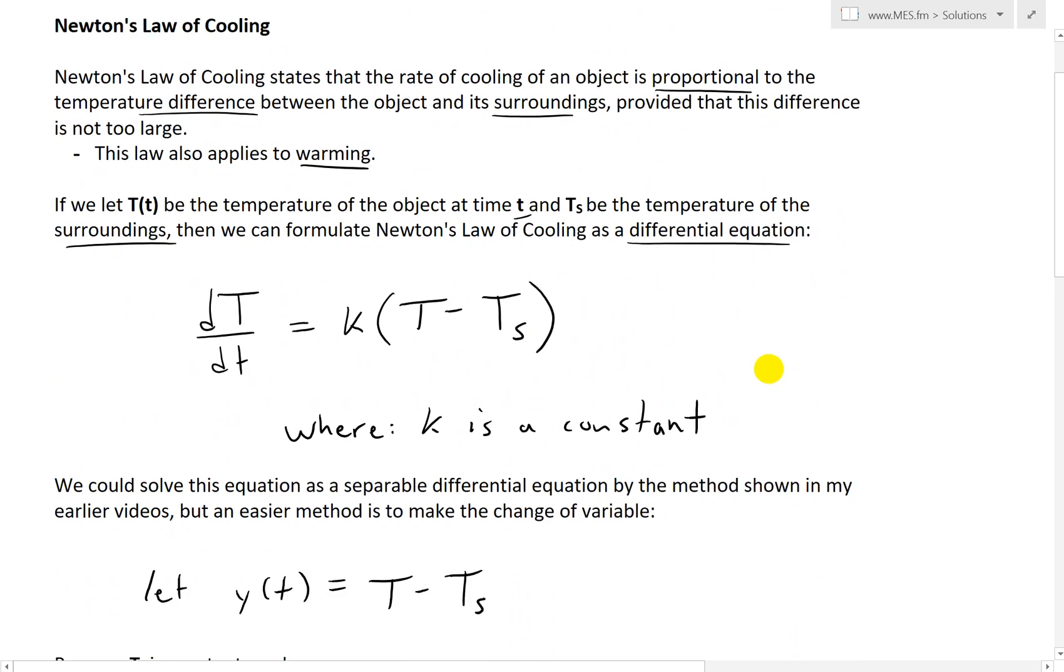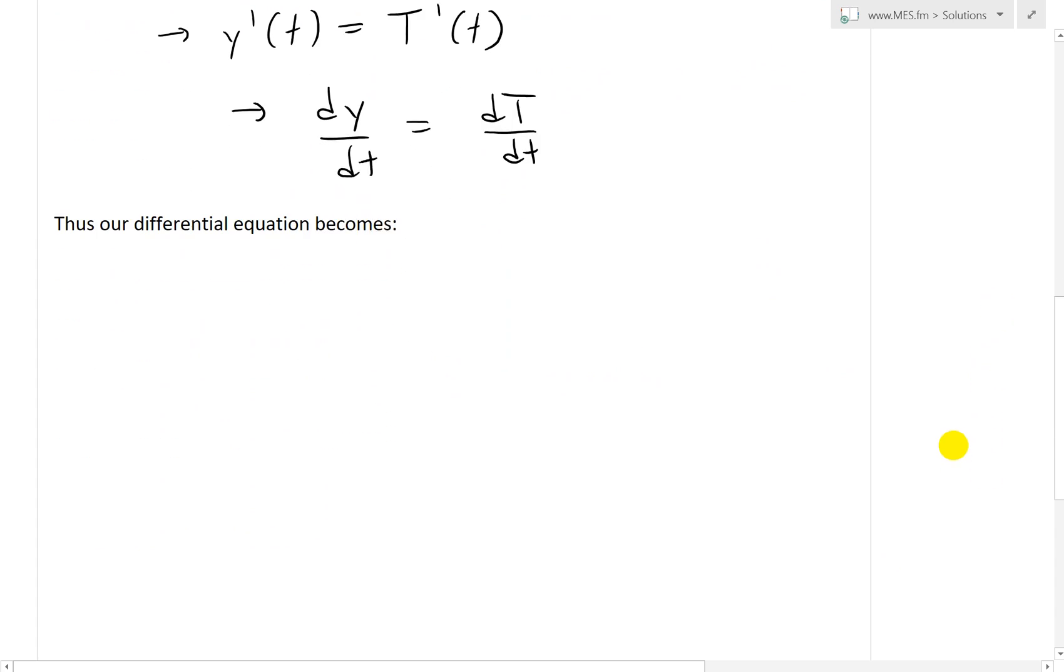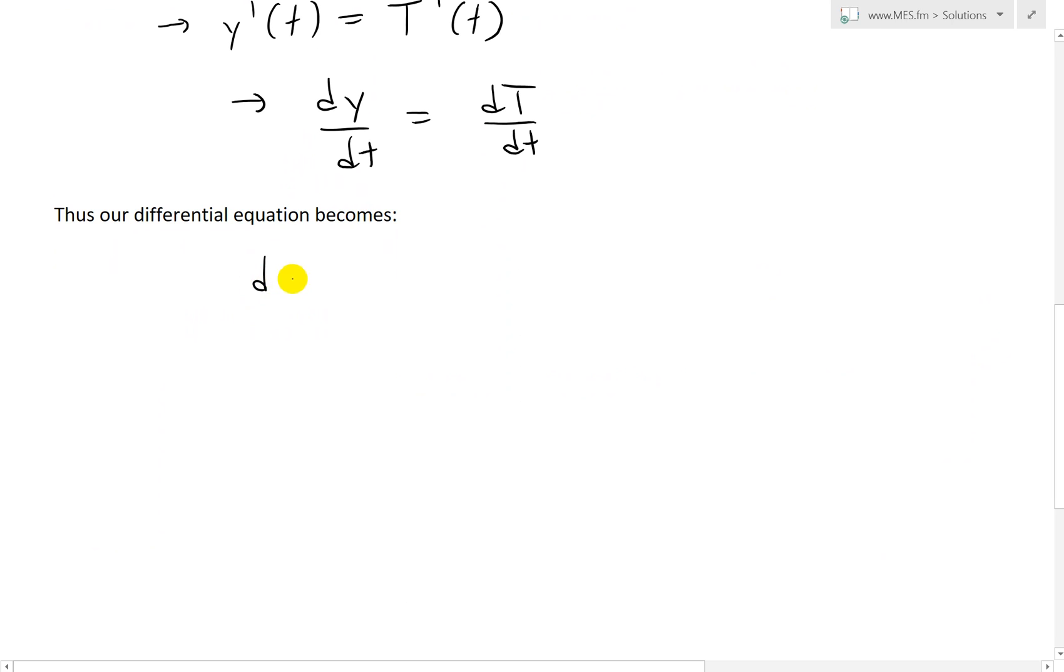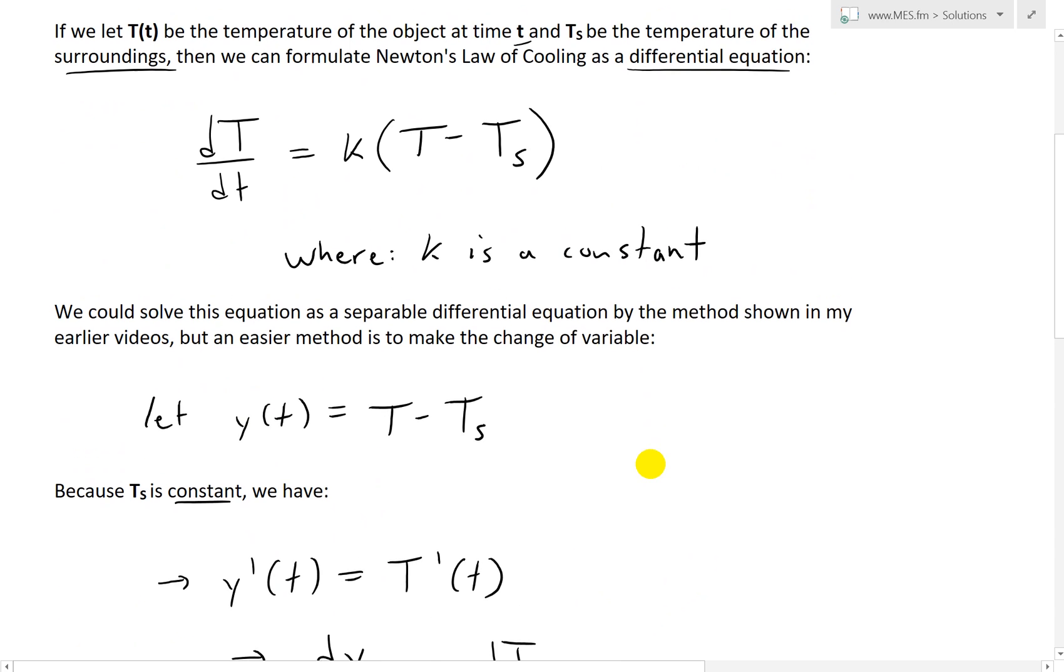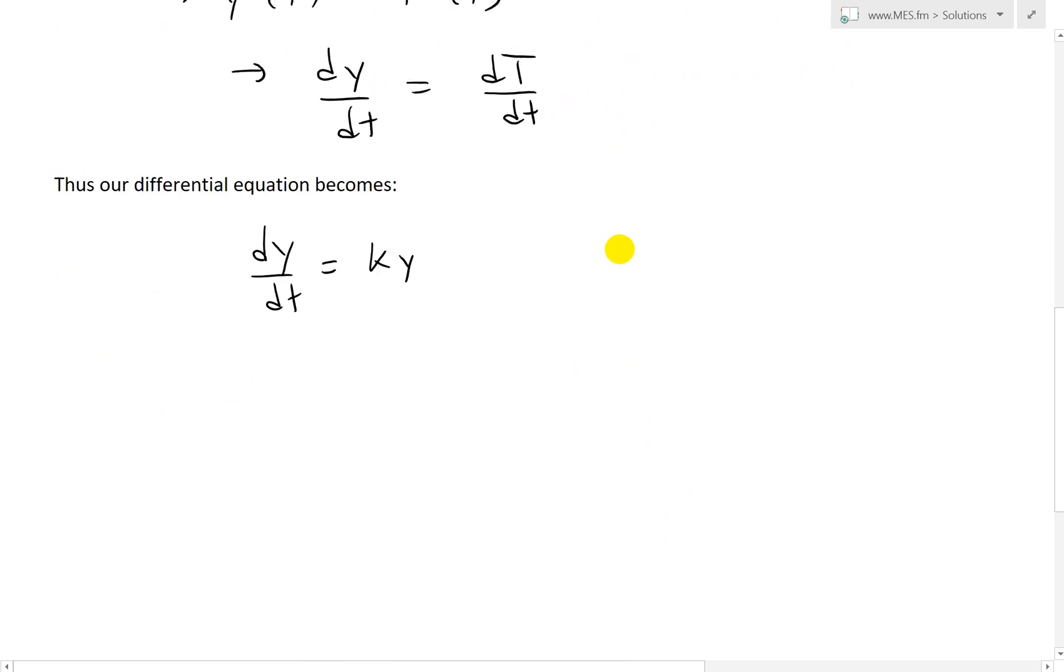We could rewrite that differential equation into a simpler one: dy over dt equals Ky, because dT over dt is the same as dy over dt, and then the difference becomes y, which is T minus T_s.